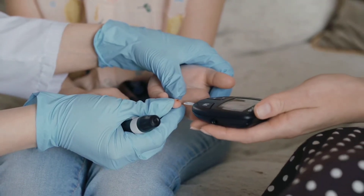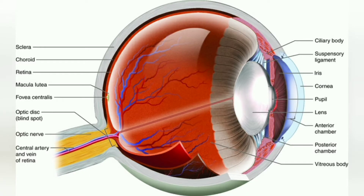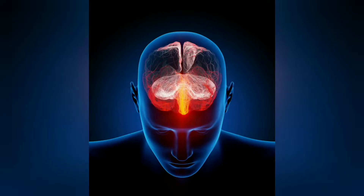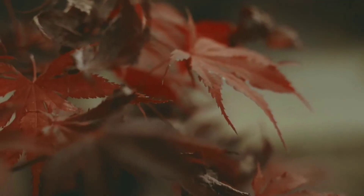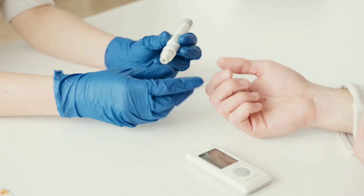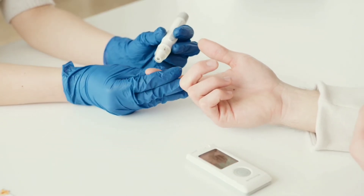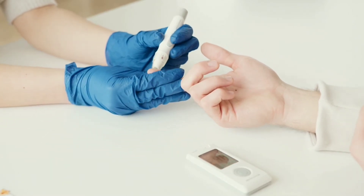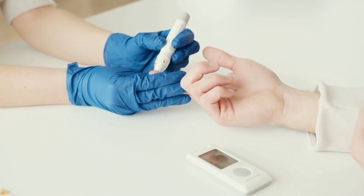The retina is the light-sensitive layer of cells at the back part of the eye that converts light into electrical signals. Those signals are sent to your brain, which turns them into the image you see. The retina needs a constant supply of blood, so if your blood sugar level is high, it may damage your blood vessels.